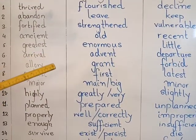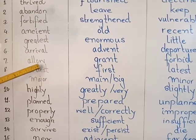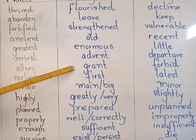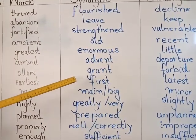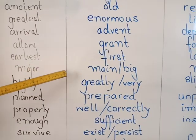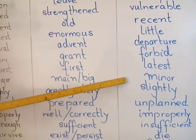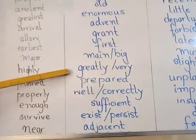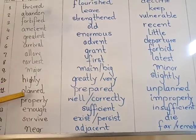Allow: synonym is 'grant', meaning azadat dena, and antonym is 'forbid', meaning mana karna. Earliest: synonym is 'first', antonym is 'latest'. Major: synonym is 'big', antonym is 'minor'. Highly: synonym is 'greatly' — you can also use 'very' — and the antonym is 'slightly'.